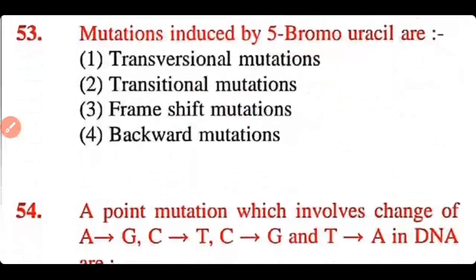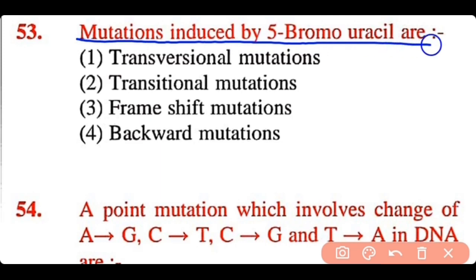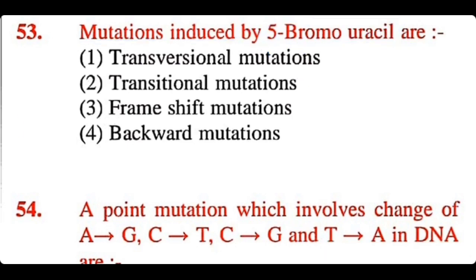Question 53: Mutation induced by 5-bromouracil is: transversional mutation, transitional mutation, frameshift mutation, or backward mutation. The correct answer is option 2. Mutations induced by 5-bromouracil are transitional mutations.